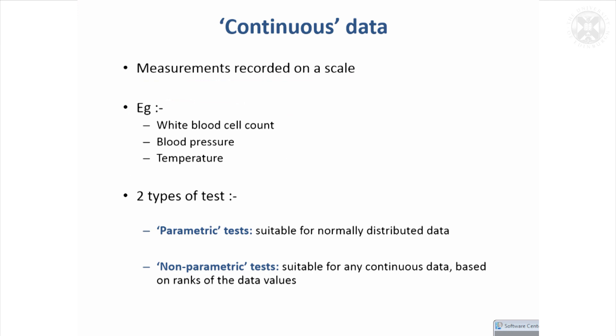Broadly speaking, there are two types of tests appropriate for continuous data. One set is called parametric tests, suitable for data considered to be normally distributed.